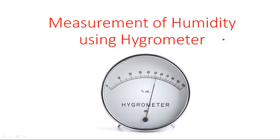In this video, I am going to explain the different types of hygrometers. In the previous video, I started the measurement of humidity, where I discussed the definition of humidity and the different types of hygrometers. A hygrometer is used to measure humidity in the atmosphere. The four types are: resistance hygrometer, capacitance hygrometer, thermal hygrometer, and gravimetric hygrometer.